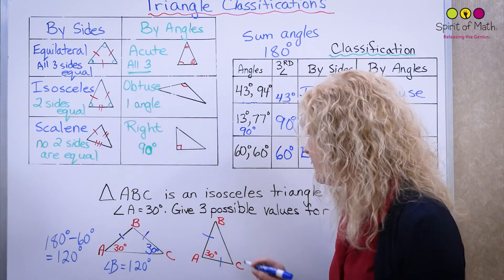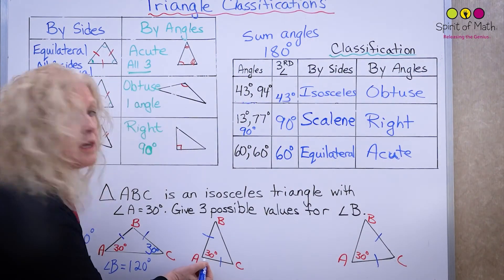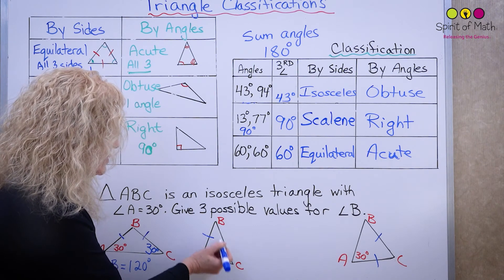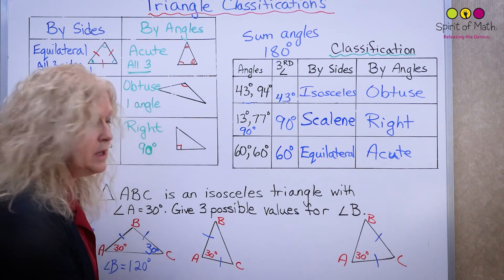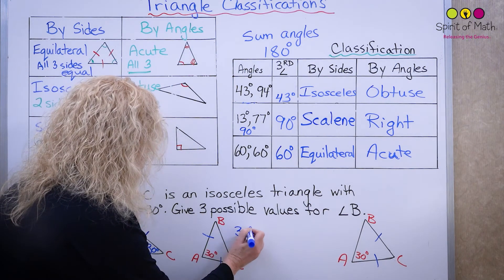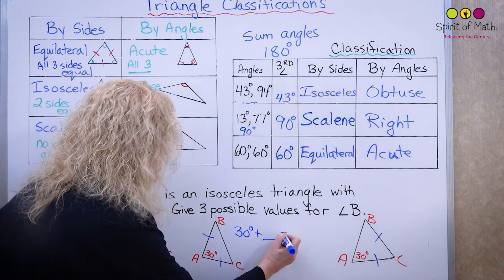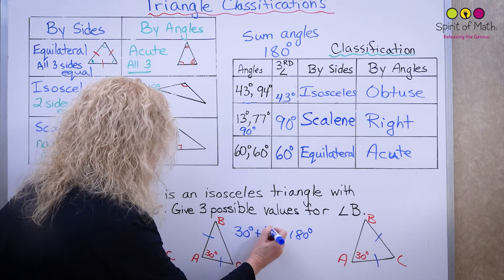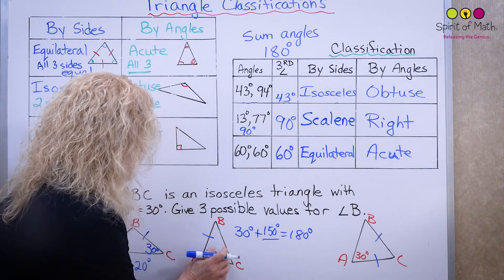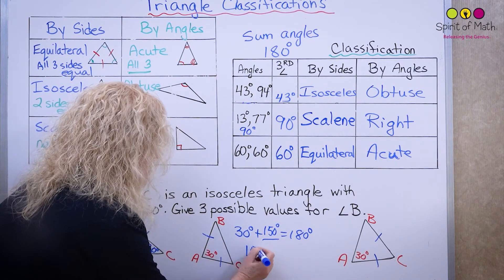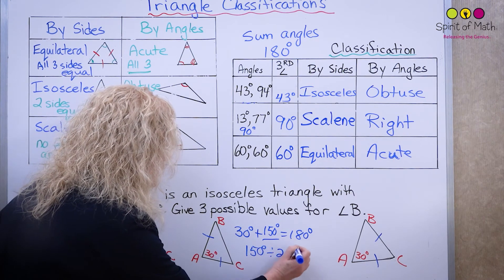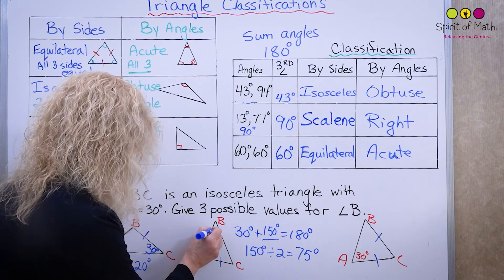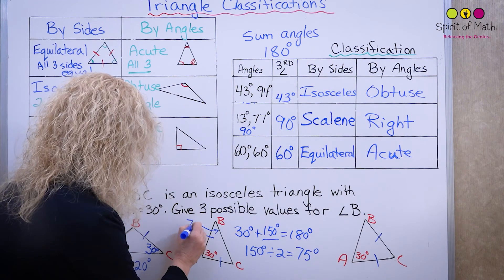In the next case, you have 30 degrees here and these two equal angles. So 30 plus two of these equals 180 degrees. That means 180 minus 30 equals 150, and since there are two equal angles, 150 divided by 2 equals 75 degrees. Angle B can equal 75 degrees.